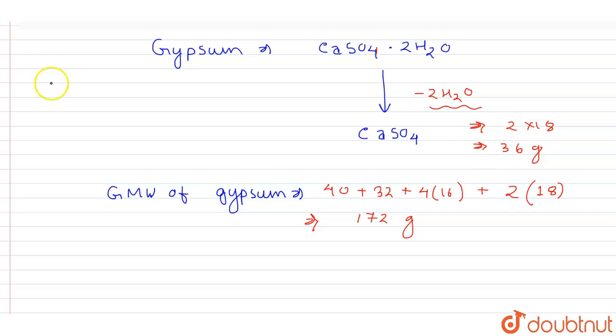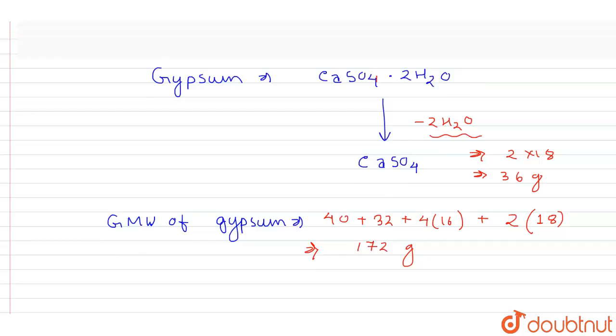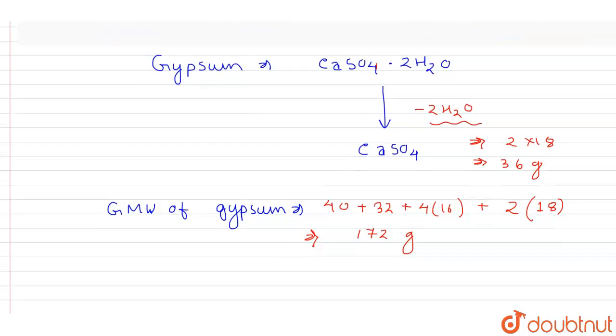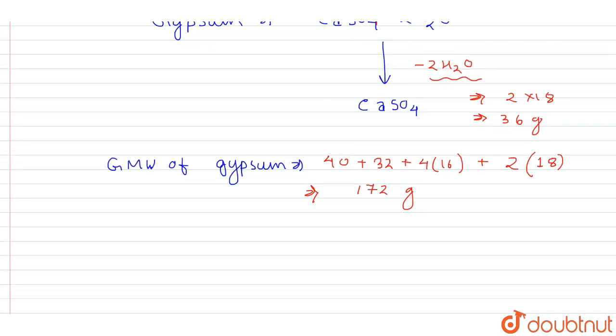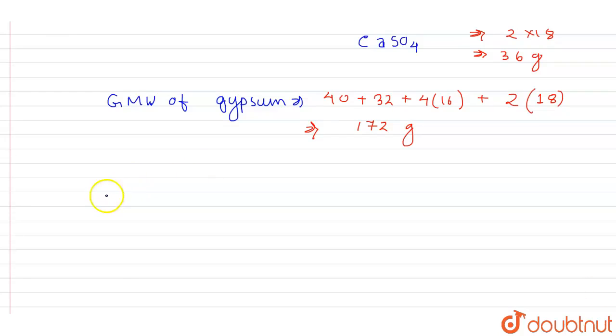Now we have to calculate in this question the percentage weight loss. So that will be: 172 grams loses 36 grams of water on dehydration.